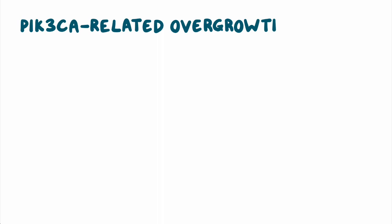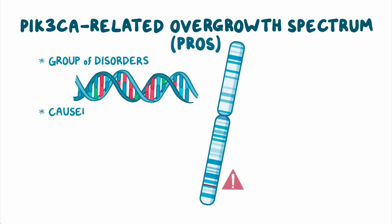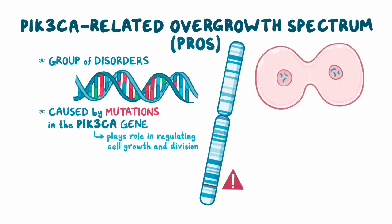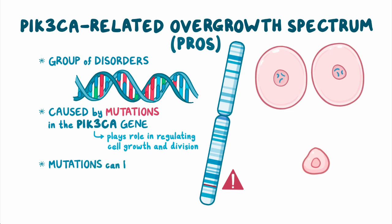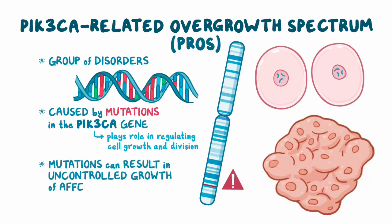PIK3CA-related overgrowth spectrum, or PROS, is a group of disorders caused by mutations in the PIK3CA gene, which plays a role in regulating cell growth and division. As a result, mutations can result in uncontrolled growth of affected tissues.